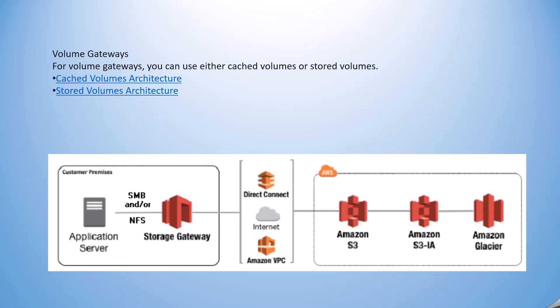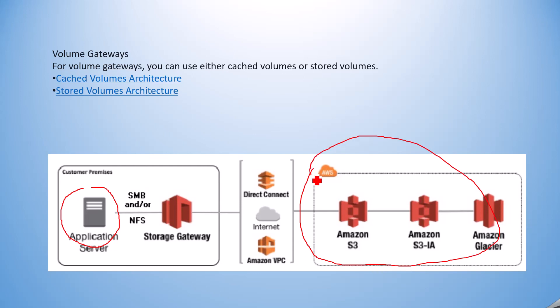I have also included a diagram of the Storage Gateway design. You can see there is a direct connector via the internet, and Amazon VPC provides connectivity between AWS and the customer's on-premises environment. As per the question, data needs to be available at the customer premises, and the Storage Gateway helps upload or download data from AWS storage.